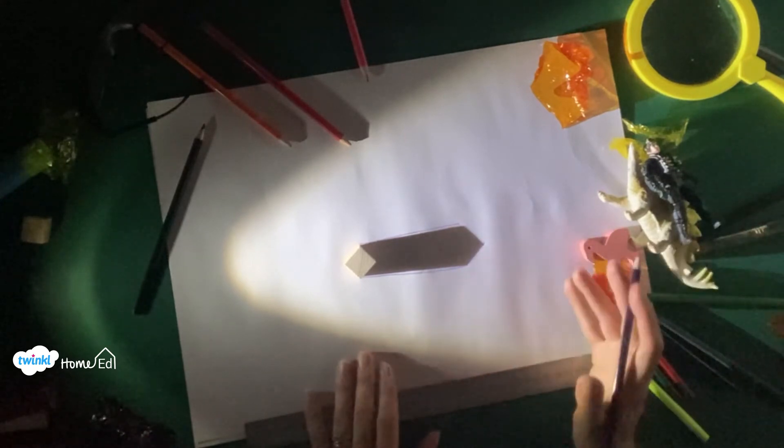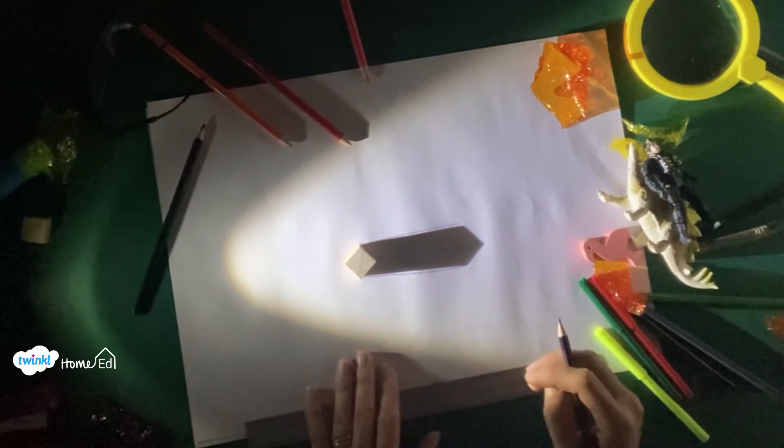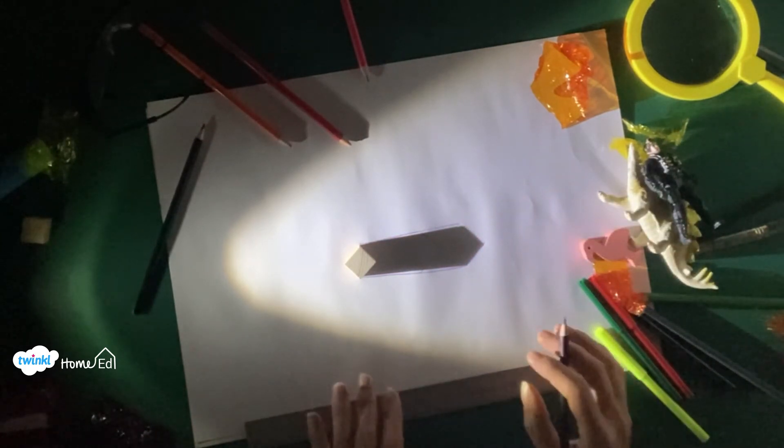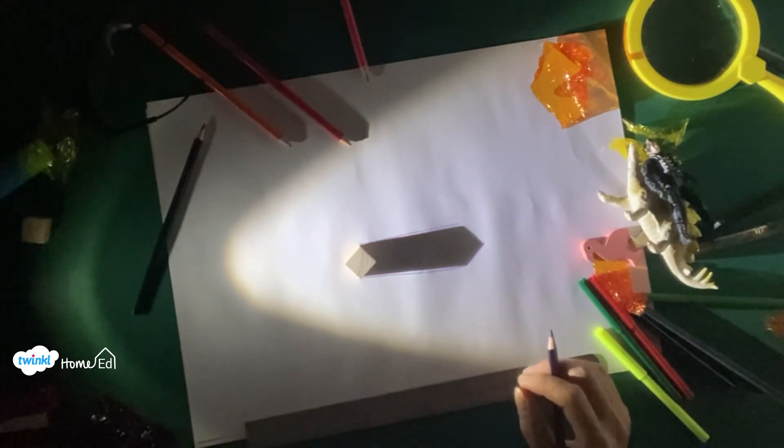So has it got taller? Has it got longer? What words would you use to describe it? Have the edges got fuzzier or are they still very straight? What other things could we change in our experiment? We could change the object.